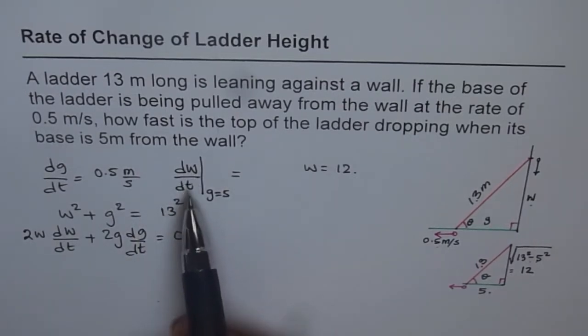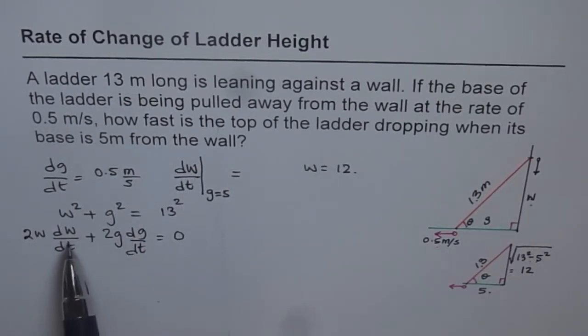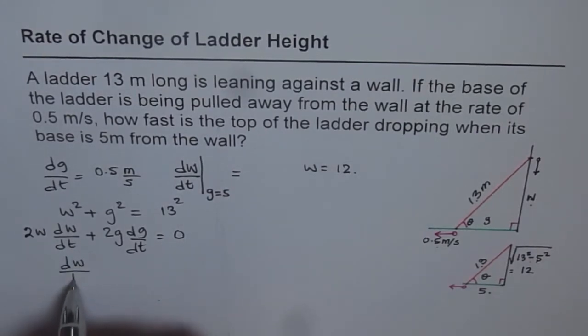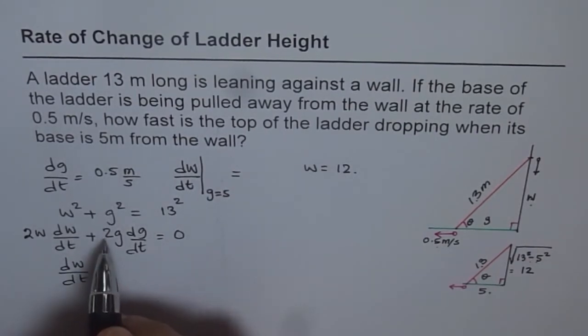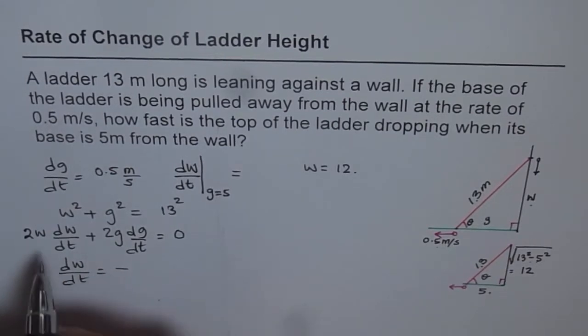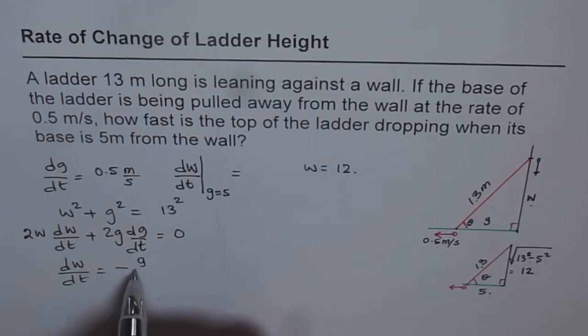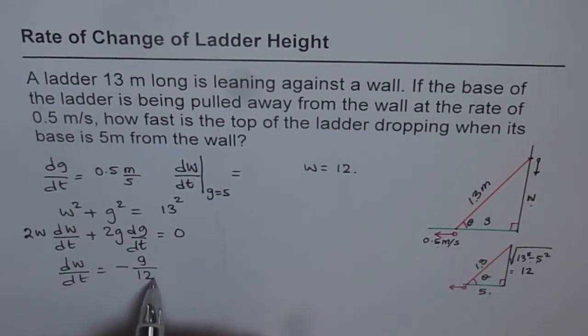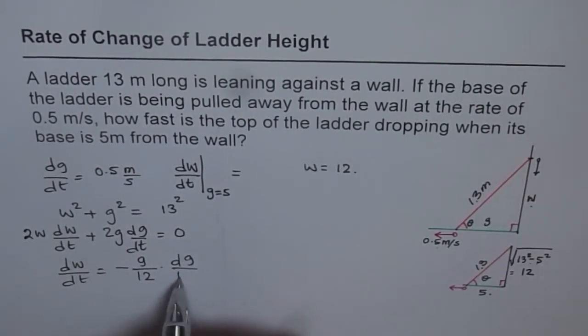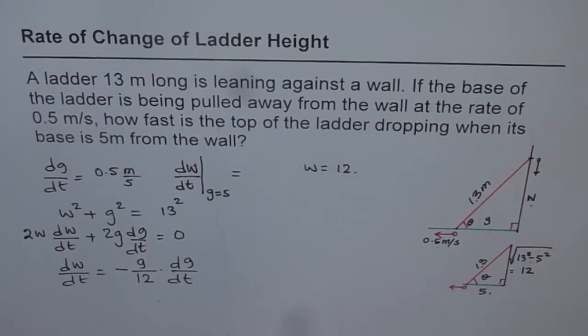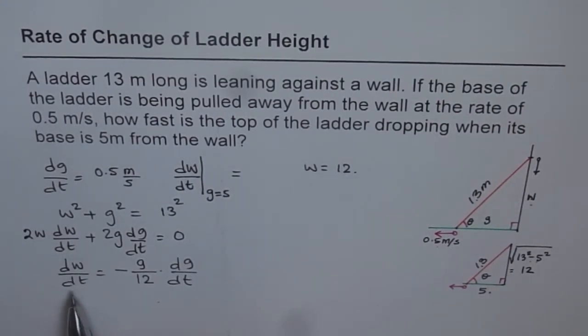Since we need to find dW/dt, we can isolate that. We get dW/dt equals - we will take it on this side, so we get minus, we will divide by 2, so 2 and 2 will cancel. We get G over W times dG/dt. That is the expression we get for dW/dt.